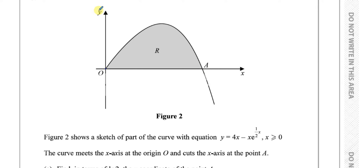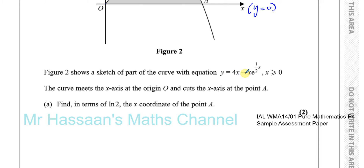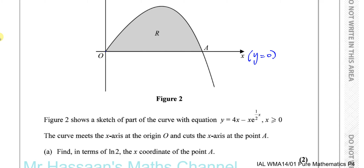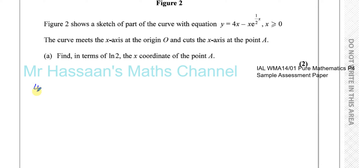Any time you have a function meeting the x-axis, we should realize that the equation of the x-axis is y equals 0, because every point on the x-axis has y equals 0. So if we equate this function to y equals 0 and replace y with 0 and solve, we get 4x minus x times e to the power of a half x is equal to 0.